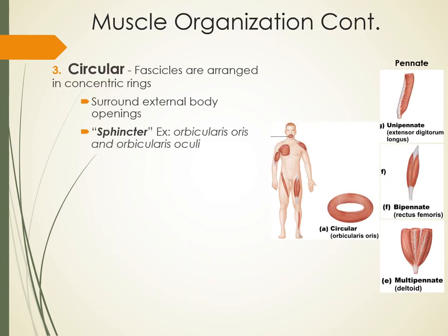Fascicles can also be circular, meaning they're arranged in a ring or circle. This occurs where we have openings to the external environment — these are usually considered sphincters. Think of the openings in our body to the outside: the orbicularis oculi allows you to blink your eyes, and the orbicularis oris goes around the mouth. These are both examples of circular fascicle arrangements.